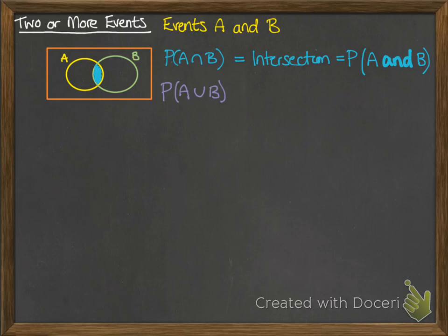We've also got this notation, which is the probability of A union B, and that means anywhere where we could have A or B or both of them. So that is the whole of that section there.